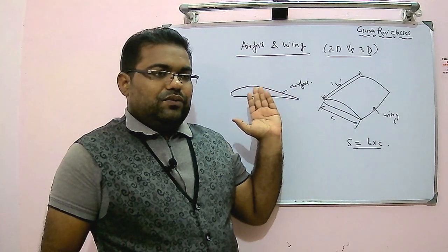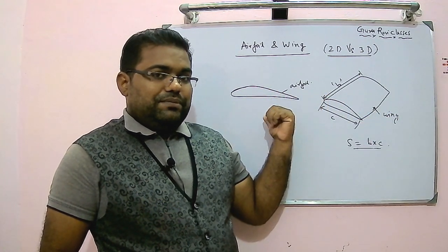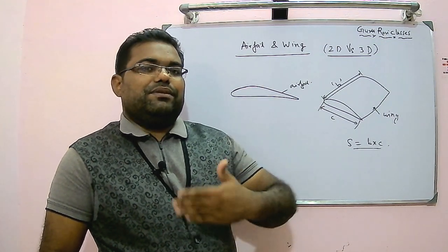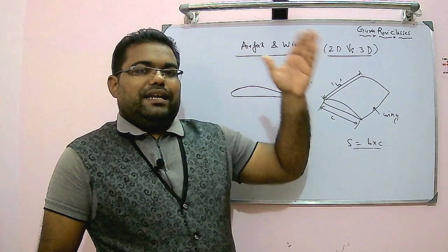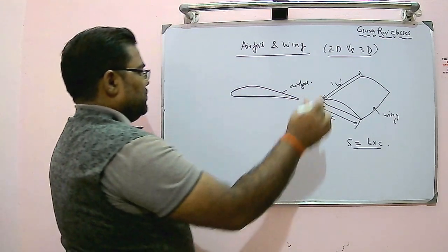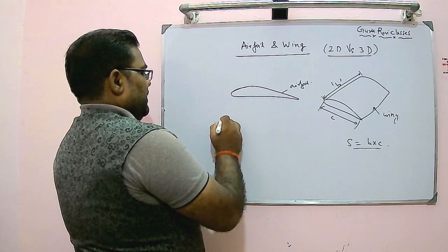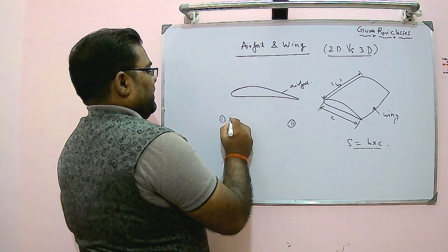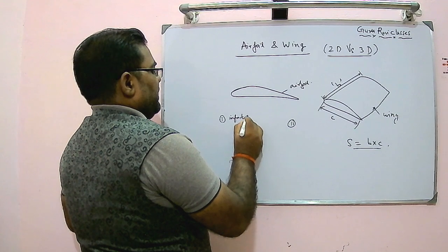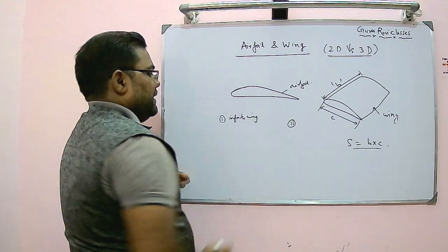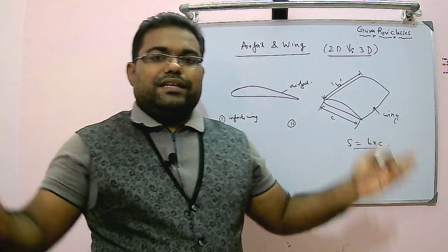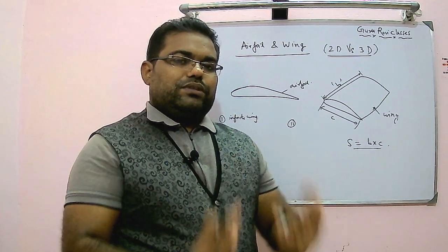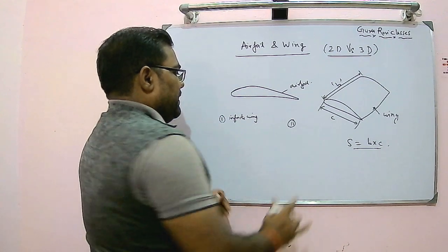That is why we say the airfoil is 2D and the wing is 3D. The basic difference between the wing and the airfoil: we say the airfoil is an infinite wing because span is considered to have infinite length. So if we differentiate, the first point is that the airfoil is an infinite wing — it has a span of infinite length — but we only consider the two-dimensional flow. The wing is a finite wing.